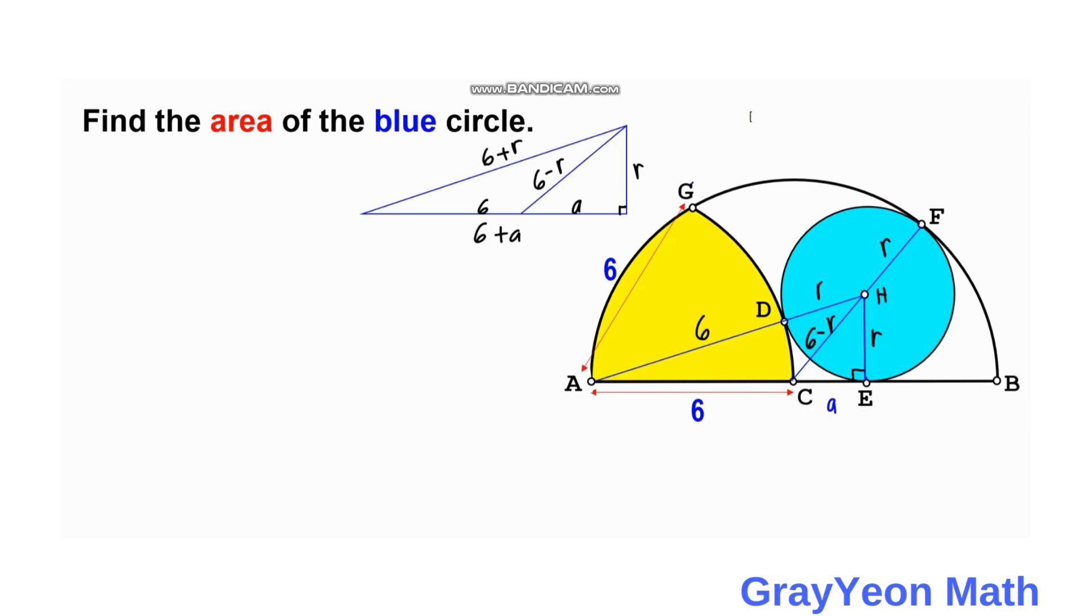Okay, so for the larger right triangle, I have isolated this triangle. Let us write an equation for this using these three segments: 6 plus R, 6 plus A, and R. So we have (6 plus R) squared